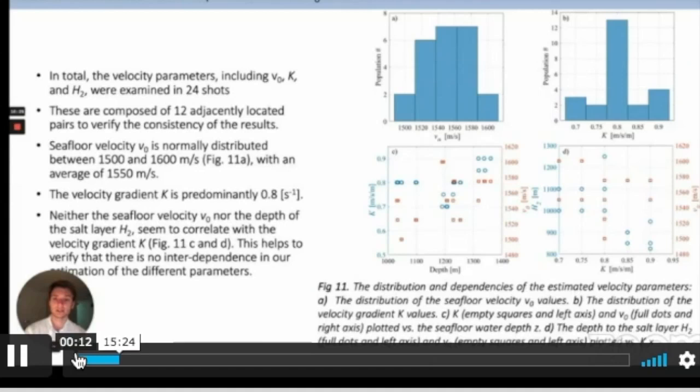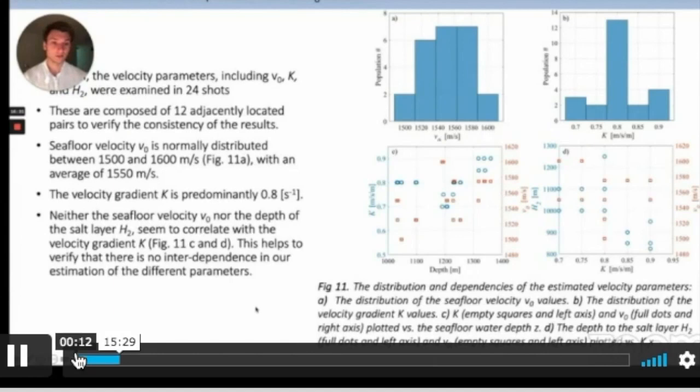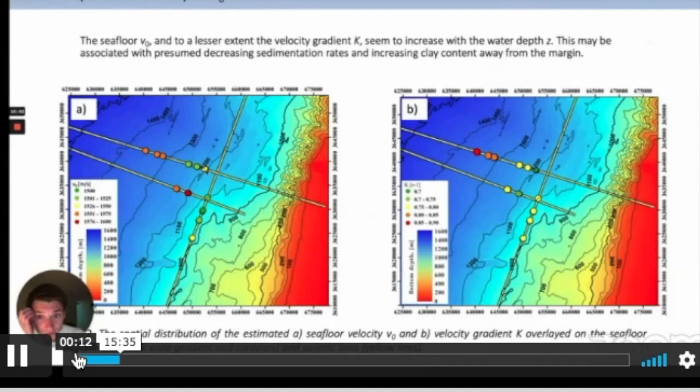This picture represents the spatial distribution of the data. This is for sound speed in the interface and this is for velocity gradient K. We can see first that the seafloor sound speed and, to a lesser extent, the velocity gradient K seem to increase with water depth. This may be associated with presumed decreasing sedimentation rates and increasing clay content away from the margin. It's interesting that here sound speed is lower, but it tends to increase with depth. And also here the gradient tends to increase with depth.